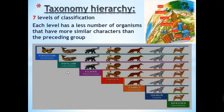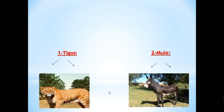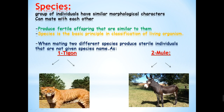The seven levels are: kingdom, phylum, class, order, family, genus, and species — the smallest. Species is a group of individuals with similar morphological characters (meaning similar external shape or appearance), that can mate and reproduce with each other, and produce fertile offspring. Fertile means they can reproduce with each other to give individuals that look like them. The species is the basic principle in the classification of living organisms.